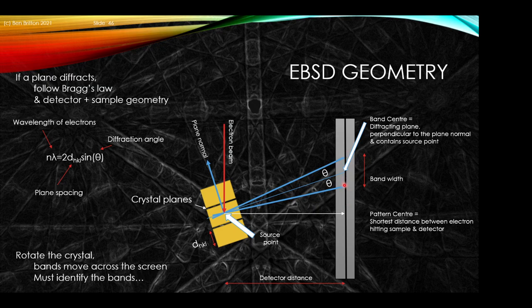There is important geometry with regards to the detector distance that will change how wide the band presents on the screen. If we move the detector closer to the sample, the band width will look narrower; as we move the detector backwards, it will look wider.